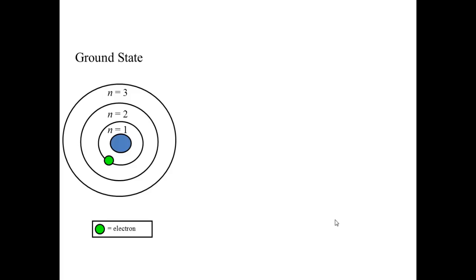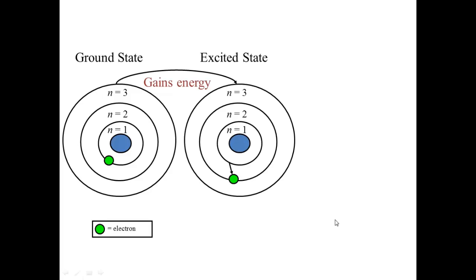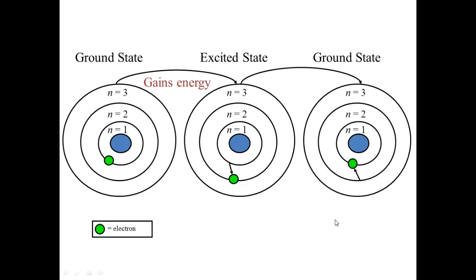In Bohr's model, the electron can move between quantized energy levels. It starts at the lowest energy level, n equals 1, which is called its ground state. If it gains energy, it can move to a higher energy level, and this is called an excited state. When it moves back down to its ground state, it will release energy in the form of light.